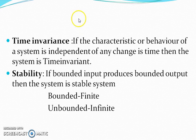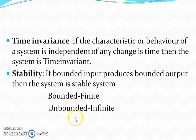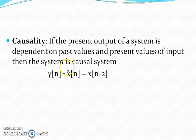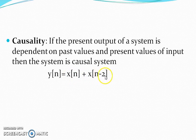Next classification is stability. If a bounded input produces a bounded output, then the system is a stable system — bounded refers to finite. For a causal system, if the present output is dependent on past values and present values of input, the system is causal. Here x(n) is the present value of input, x(n−2) is a delayed form of input, and the result is the present output.